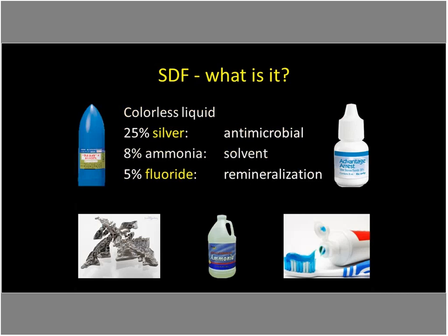But this is an oversimplification, because the silver, the ammonia, and the fluoride all kill bacteria on contact. The silver and the fluoride both incorporate into the tooth structure — the fluoride, as we know, creates fluorapatite, but the silver actually creates these silver-protein conjugates for any protein that's exposed, and then it creates solid silver structures that reinforce the weakened part of the teeth. So they all help control the bacteria.